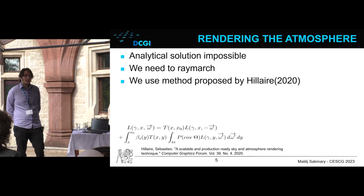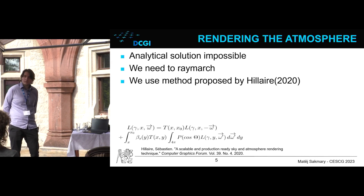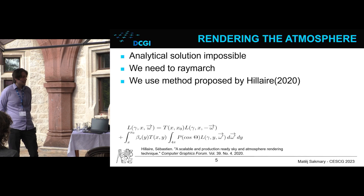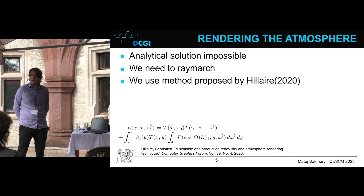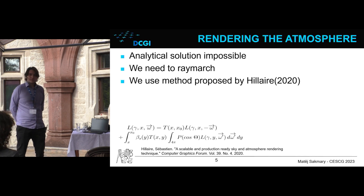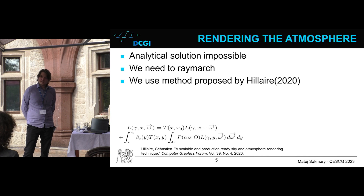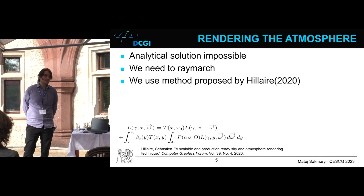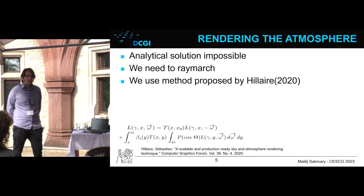To actually solve this equation and get the desired look of our sky, an analytical solution is impossible, so we need other methods. In our work, we use ray marching, which generates a number of steps along a ray. At each step, we evaluate the medium and calculate the local light contribution, assuming it is constant along the entire step. By summing these local contributions, we get our integration result. Specifically, we use a method proposed by Sebastian Hillaire, which uses a set of pre-computed lookup tables to speed up the ray marching process.